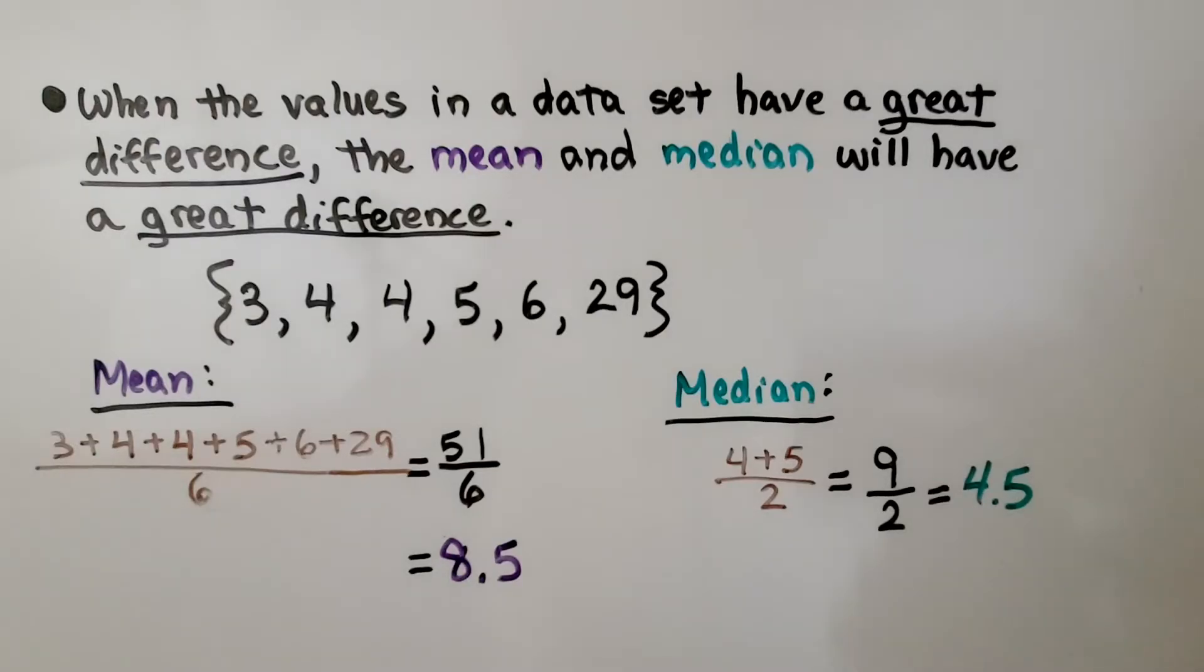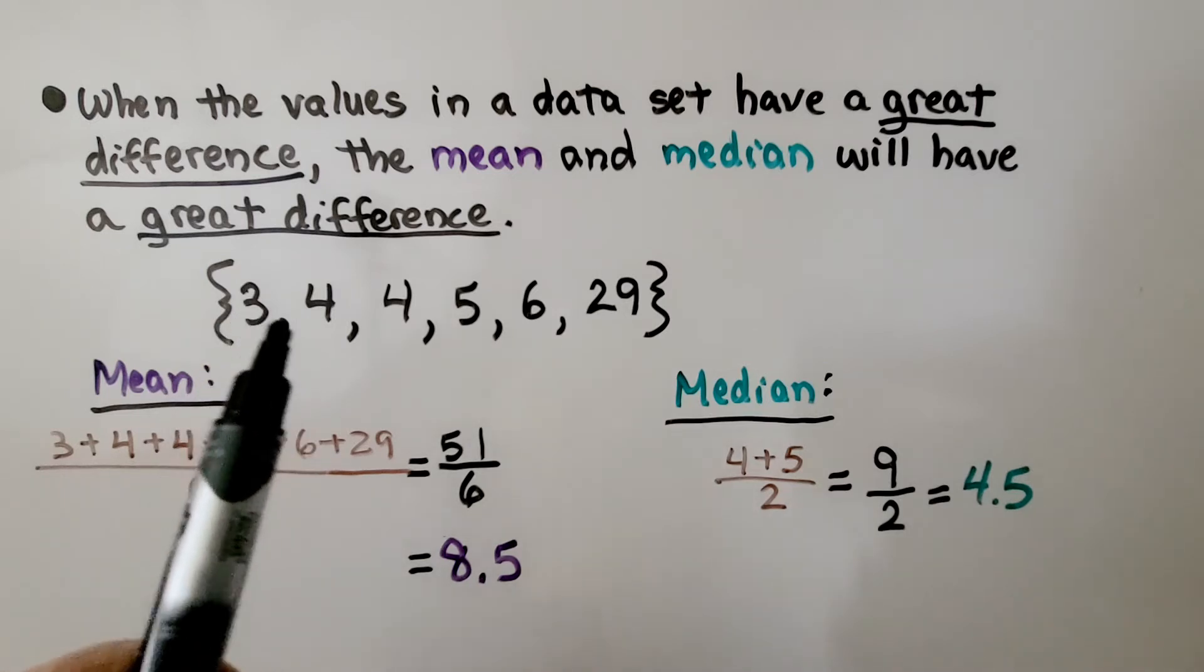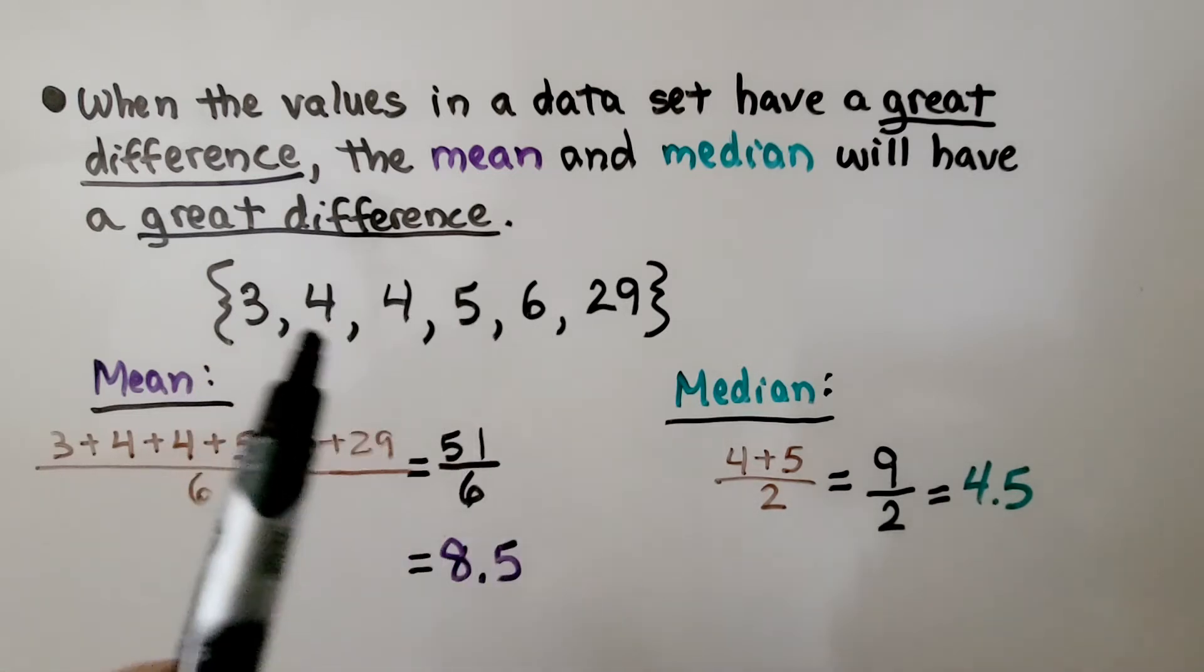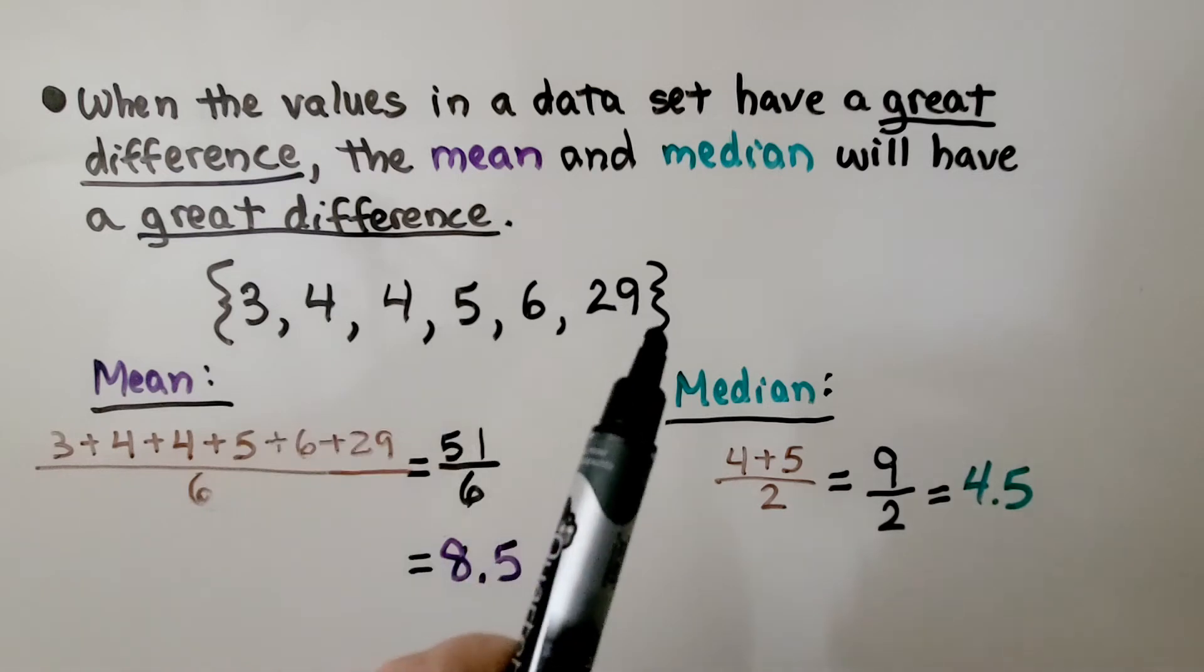When the values in a data set have a great difference, the mean and median will have a great difference. If you look at these values, we have 3, 4, 4, 5, 6. They're all pretty close to each other. Then we've got this 29.